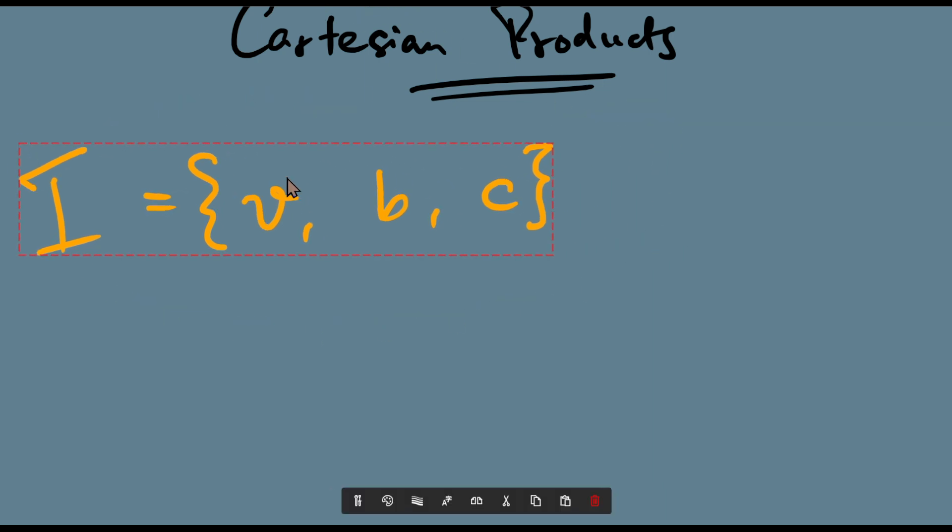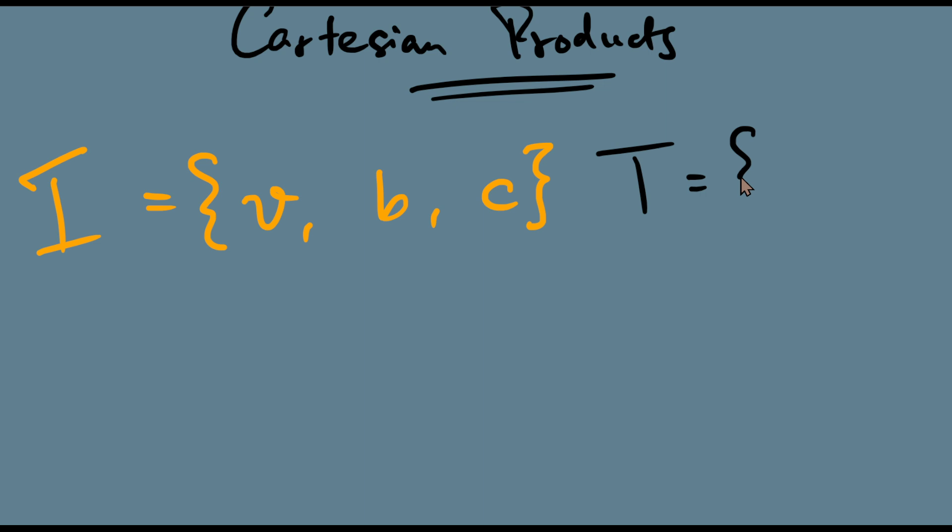So this is my set of ice creams. I have a set of toppings: choco chip, cherries, and maybe caramel. Again, I'm using shorthands. I'm interested in what I cross T is. I is a set, T is another set. So I want the meaning of I cross T.